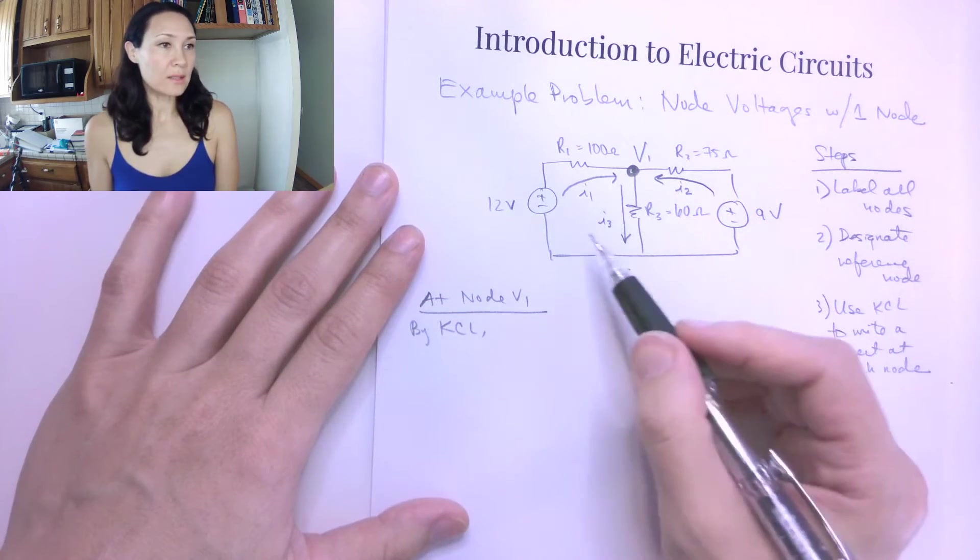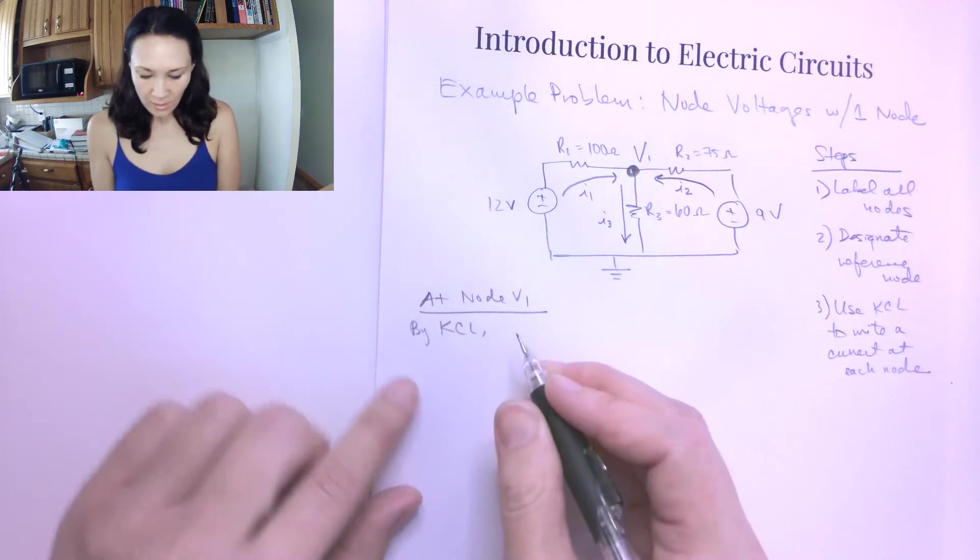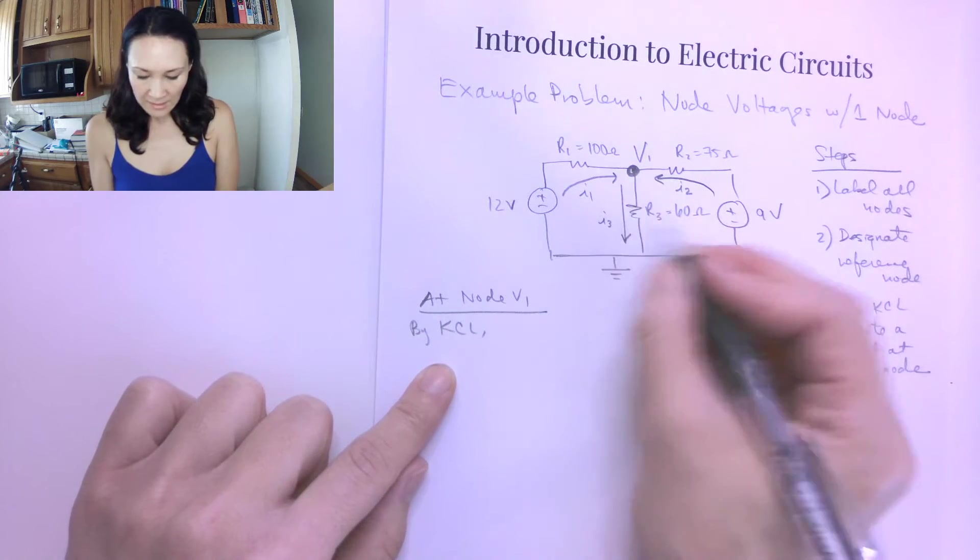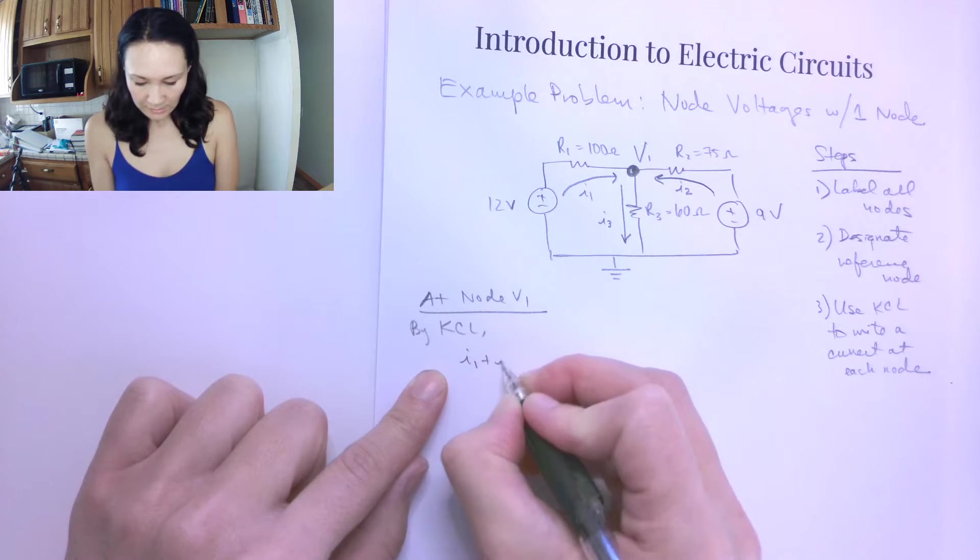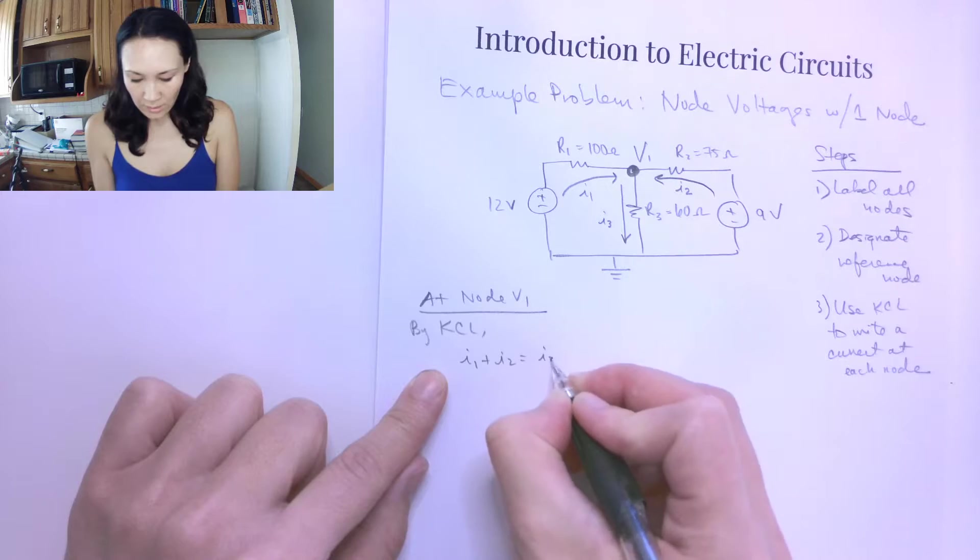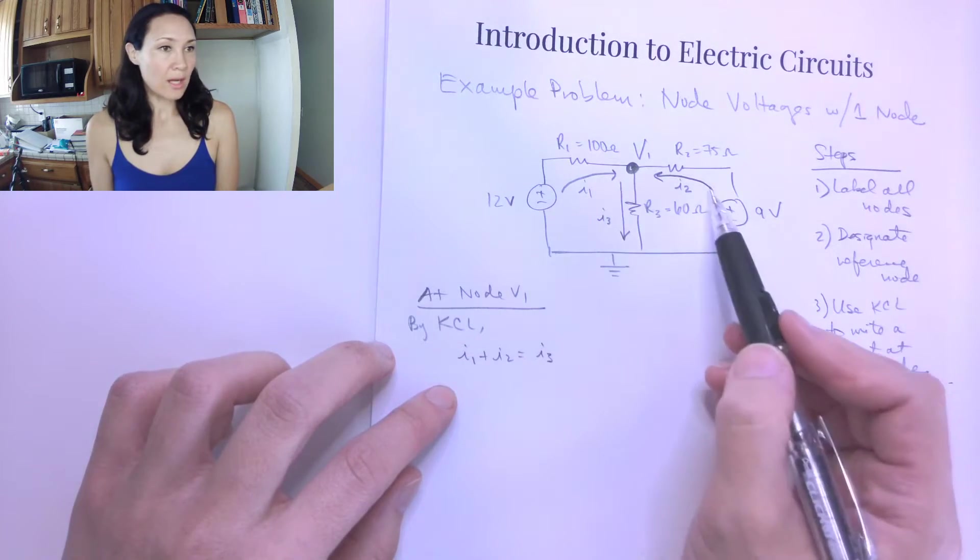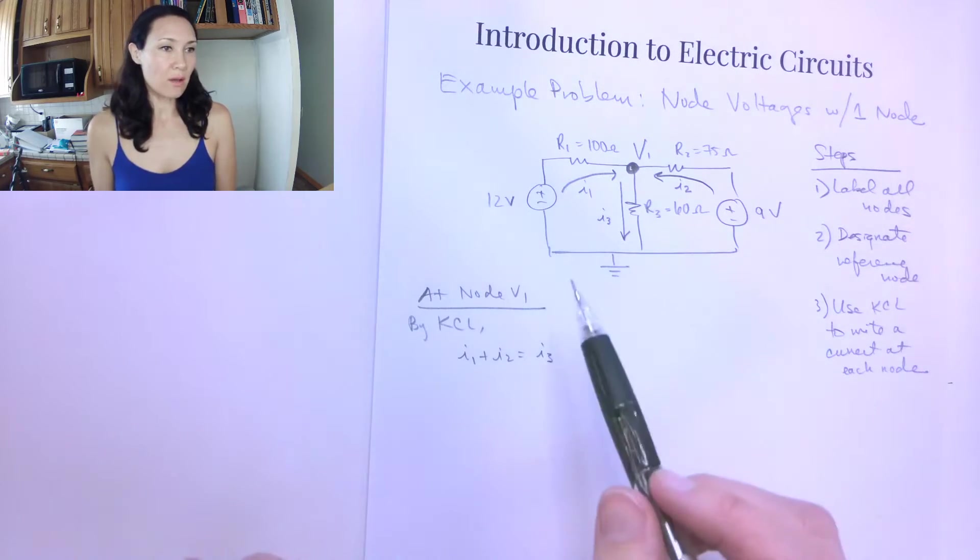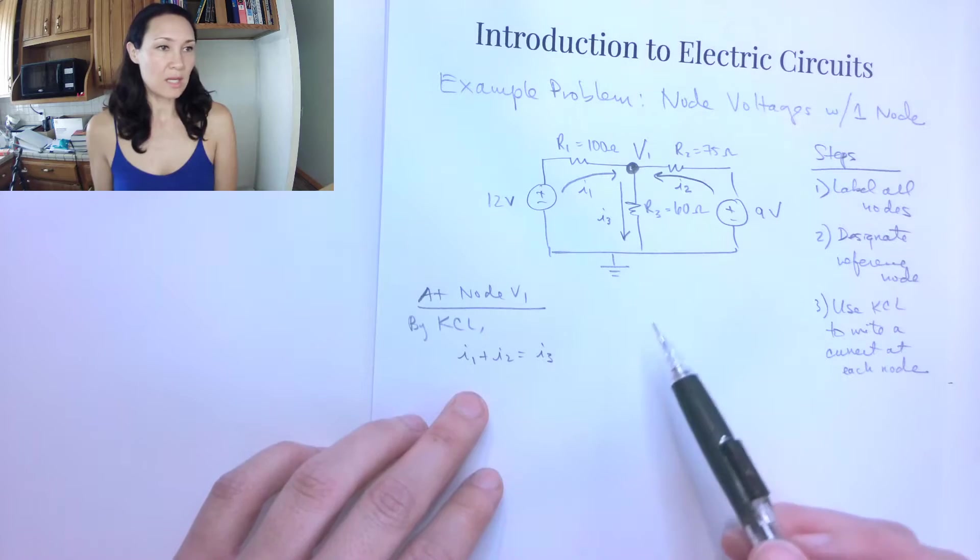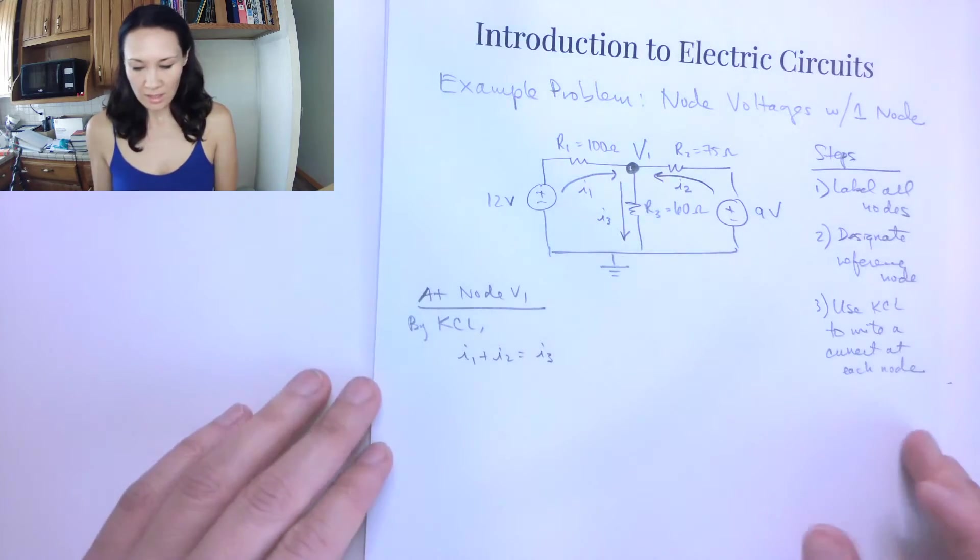So KCL tells us that the sum of currents coming in is equal to the sum of currents going out. So our equation, based on these currents that we've labeled here, is going to be I1 plus I2 is equal to I3. And you don't need to be too worried about if you get the direction of the arrows correct, because it actually doesn't matter. When you go to solve this, if you get one of these currents as being a negative current, then you just know that the arrow actually goes the other way, and you can fix it.